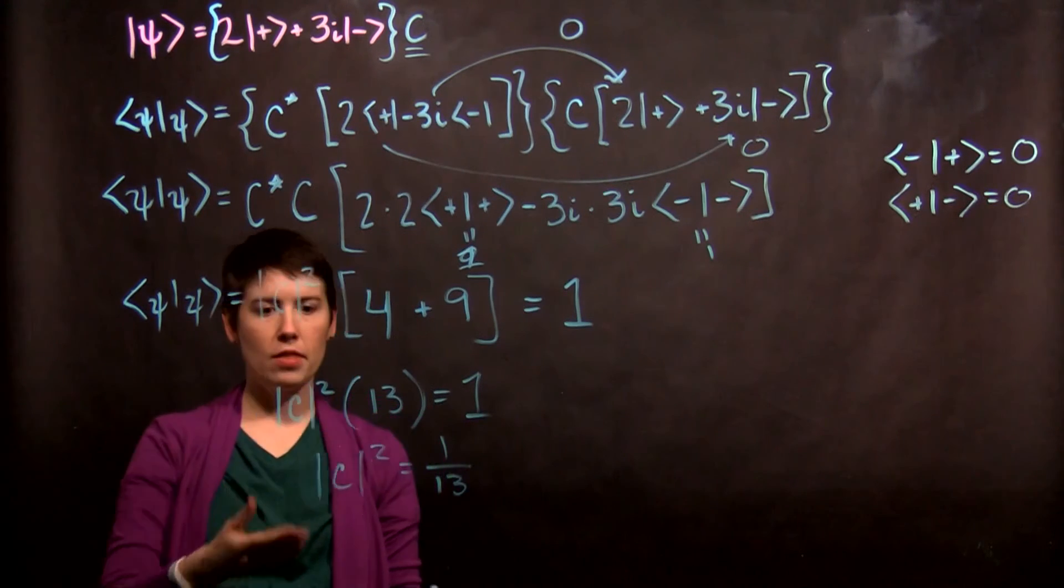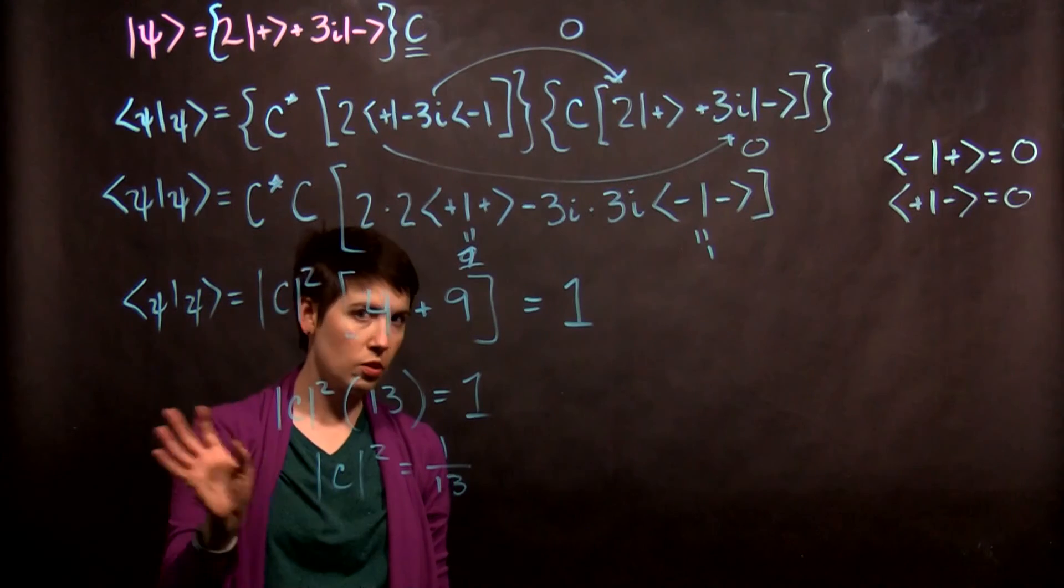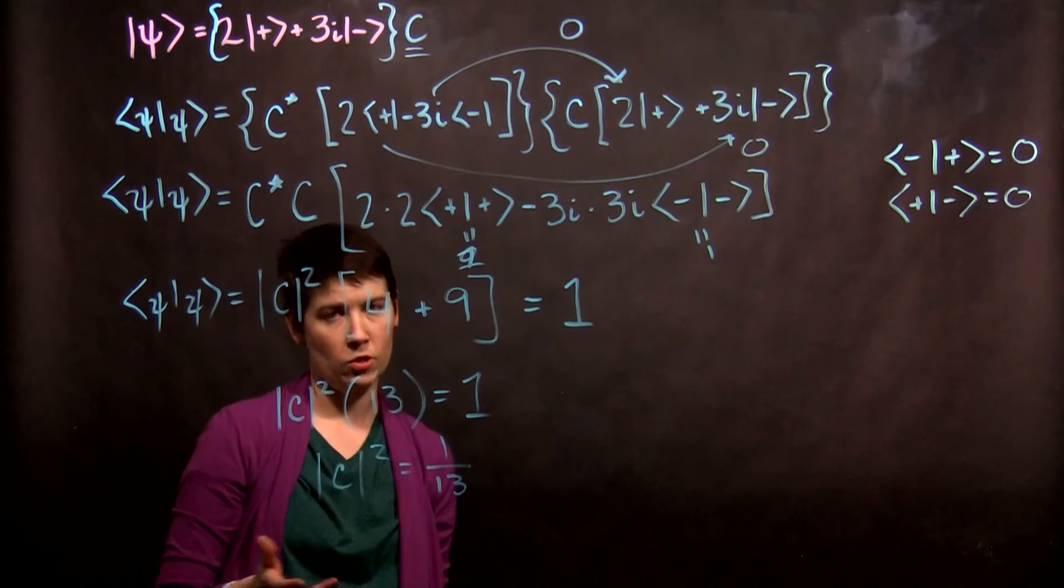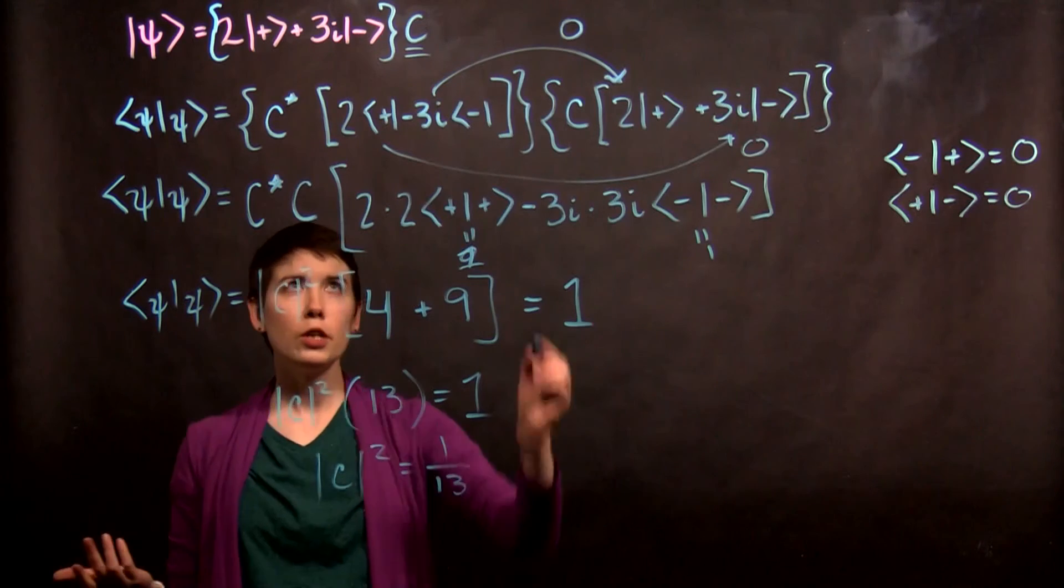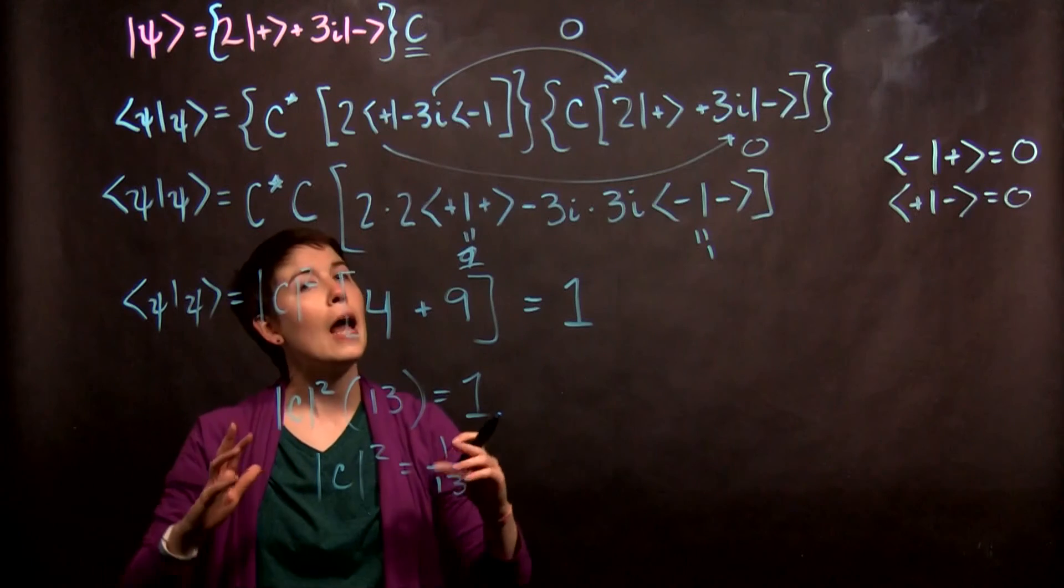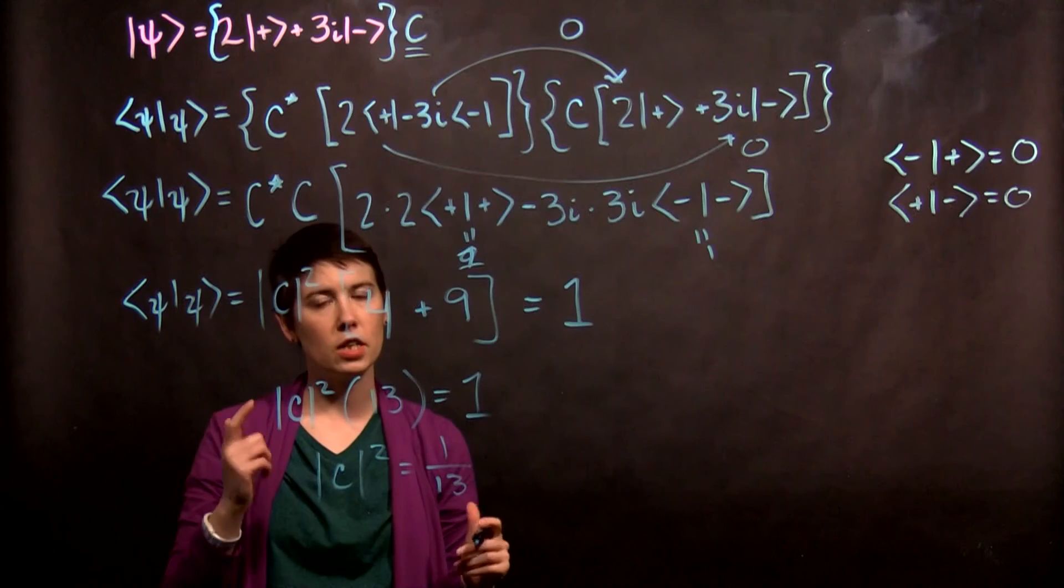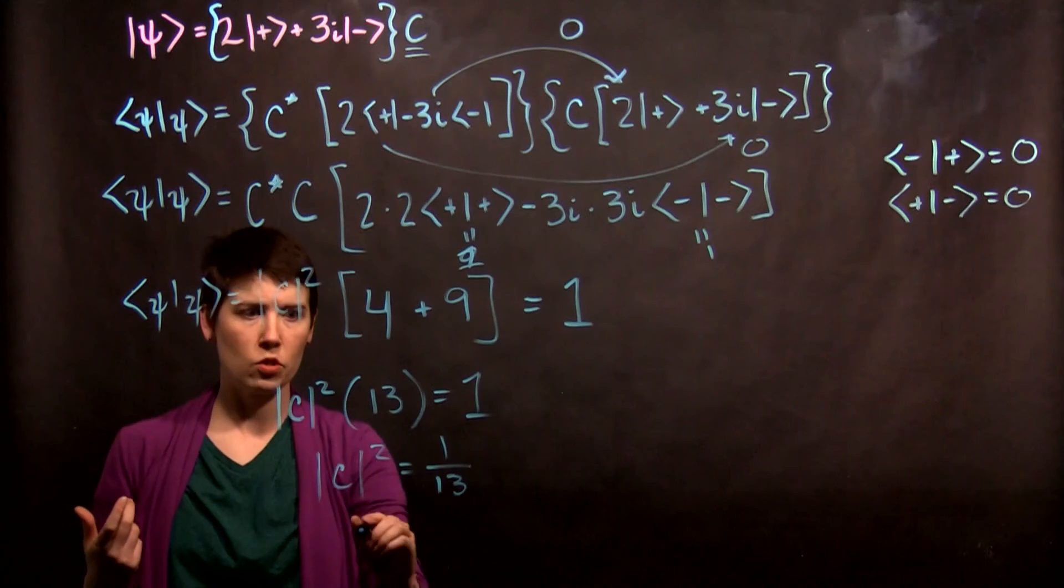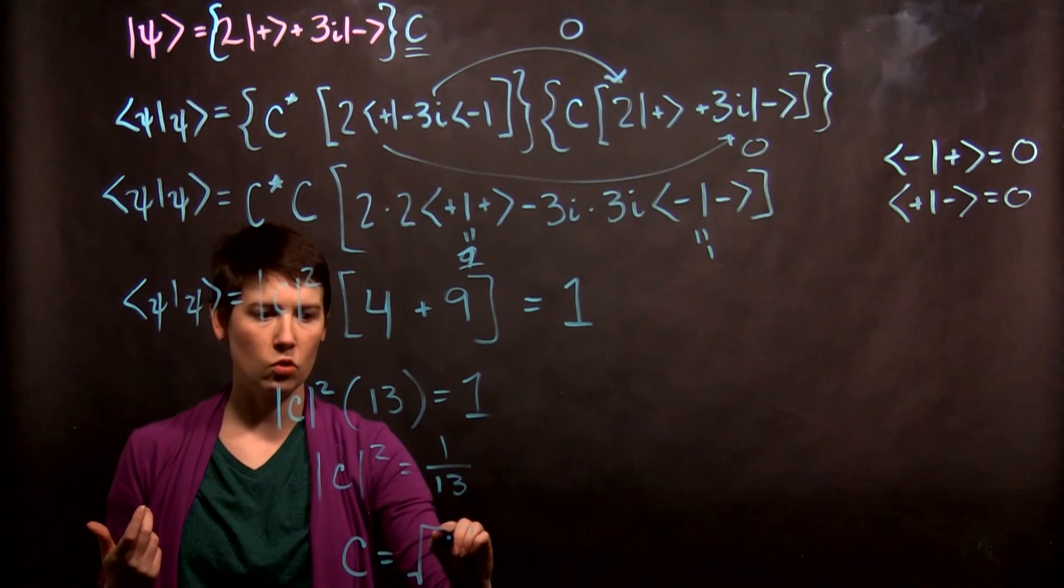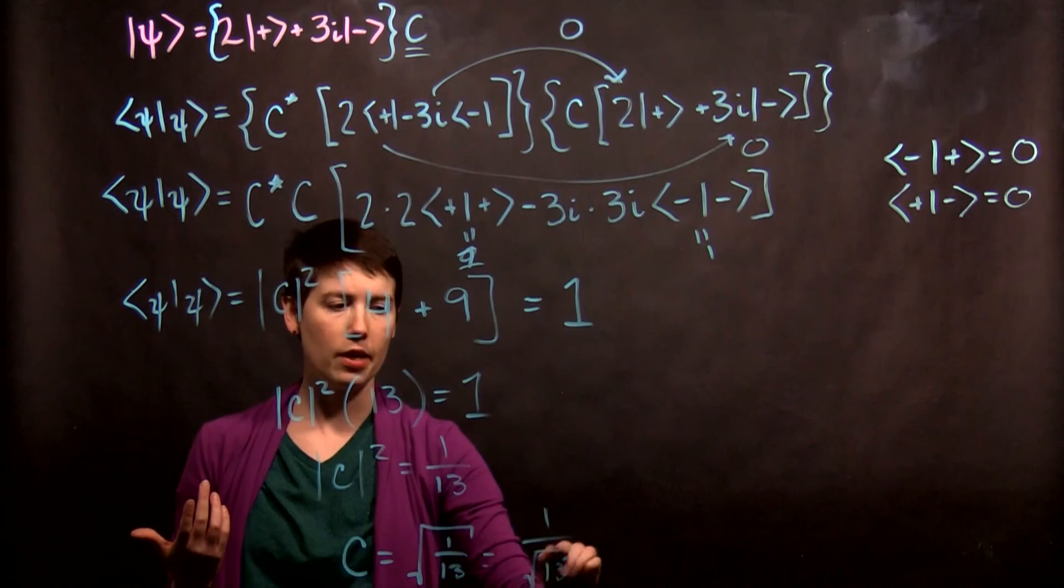Now obviously we can then have a few choices here. Now c could be a complex number, which means we have some unknown complex phase. So we could say that this is negative 1 over square root of 13. But it's totally reasonable to choose this constant to be real and positive. It doesn't have to be. But mathematically, it's not going to matter if we give it a complex phase. So what's a good choice here is to say that c is just equal to the square root of 1 over 13. And it's completely reasonable to write that as 1 over root 13.